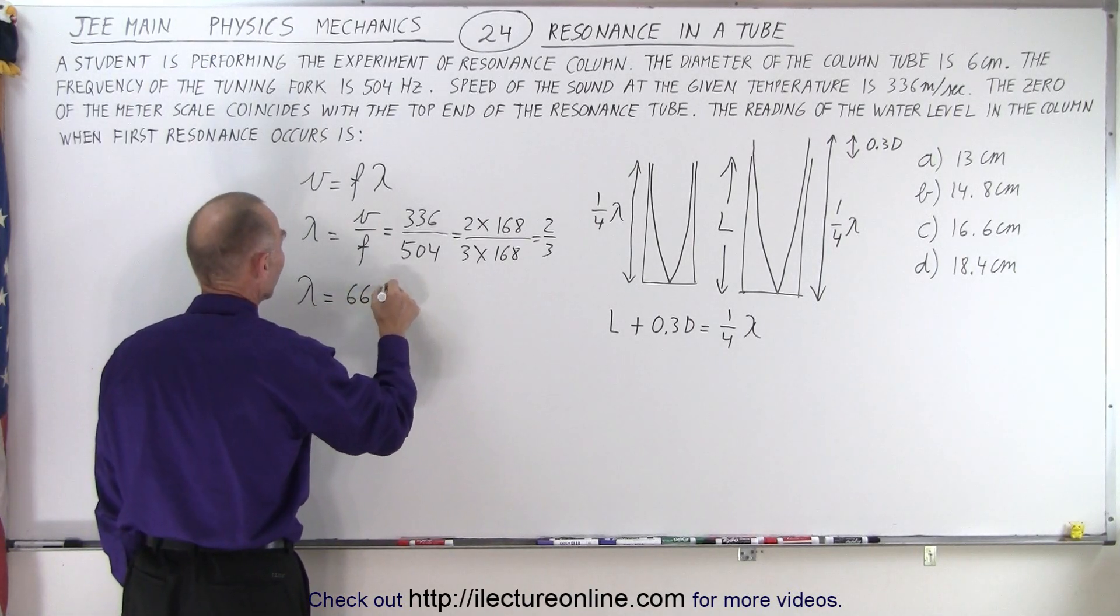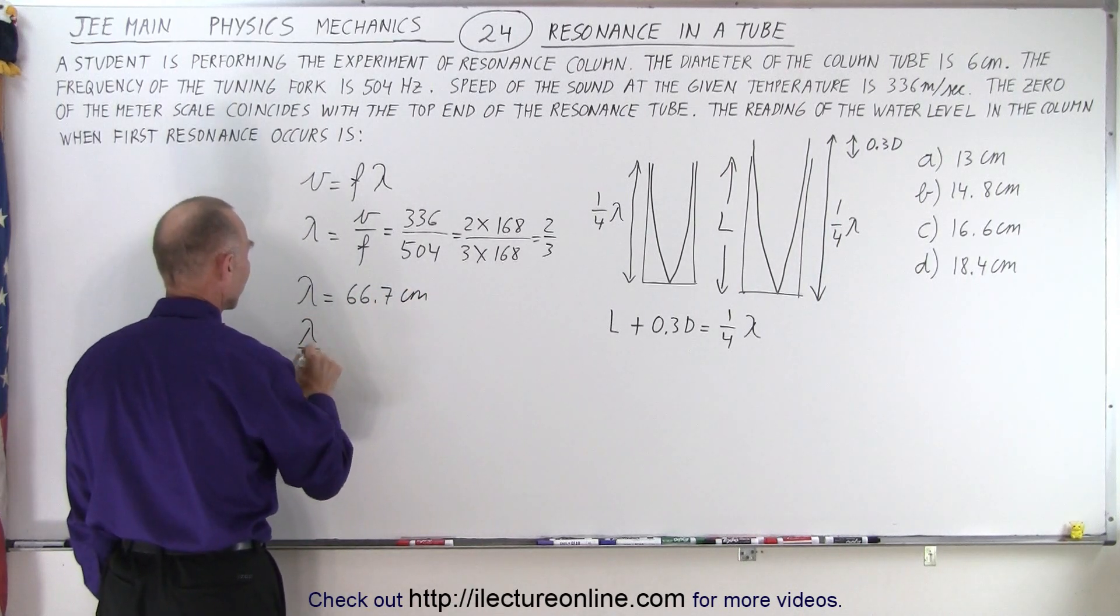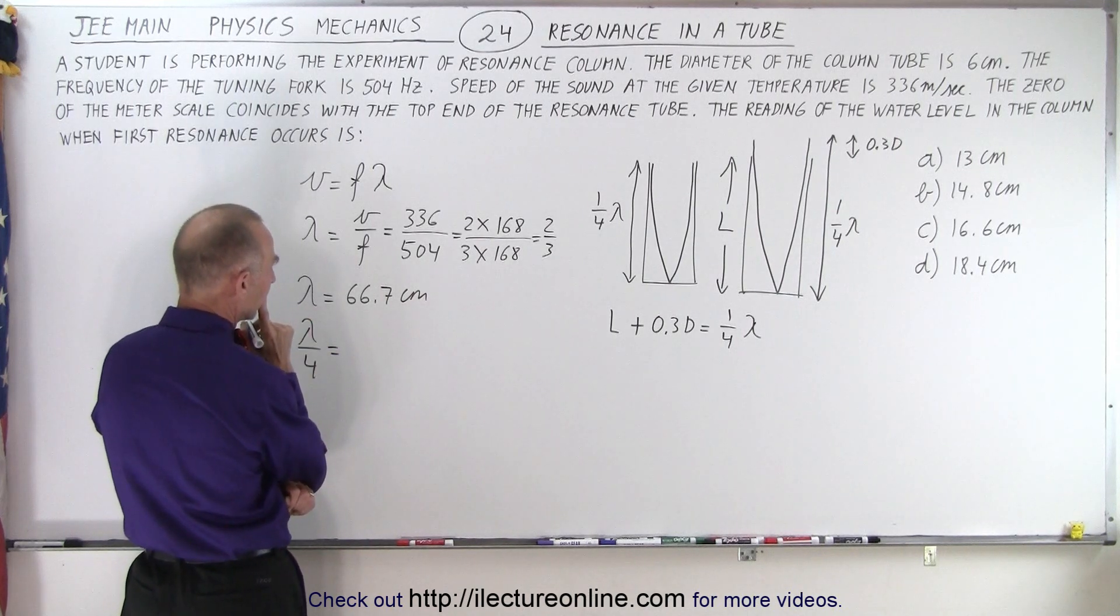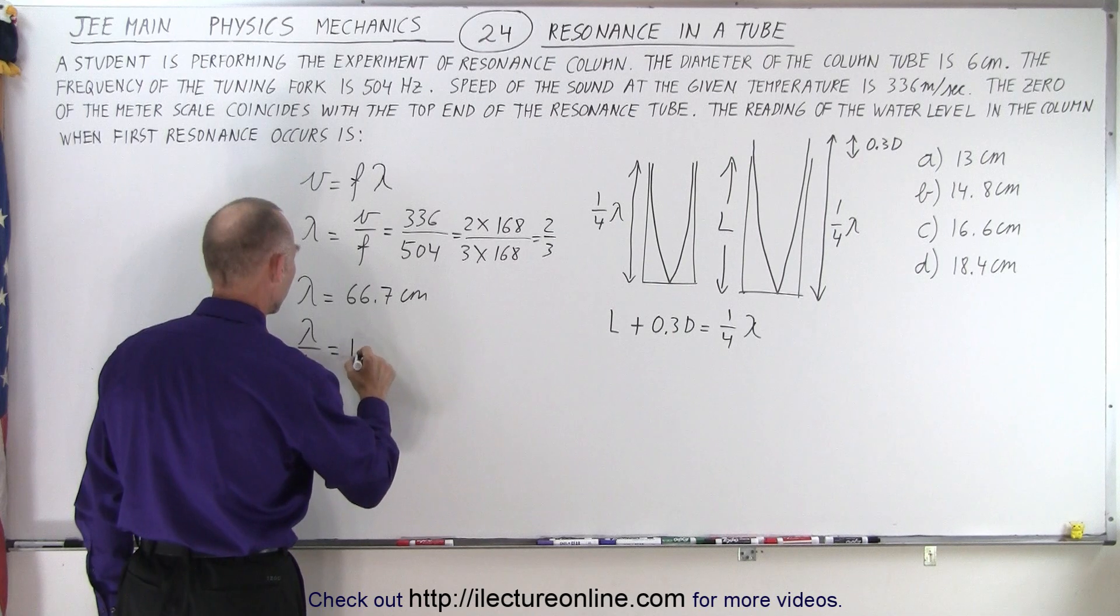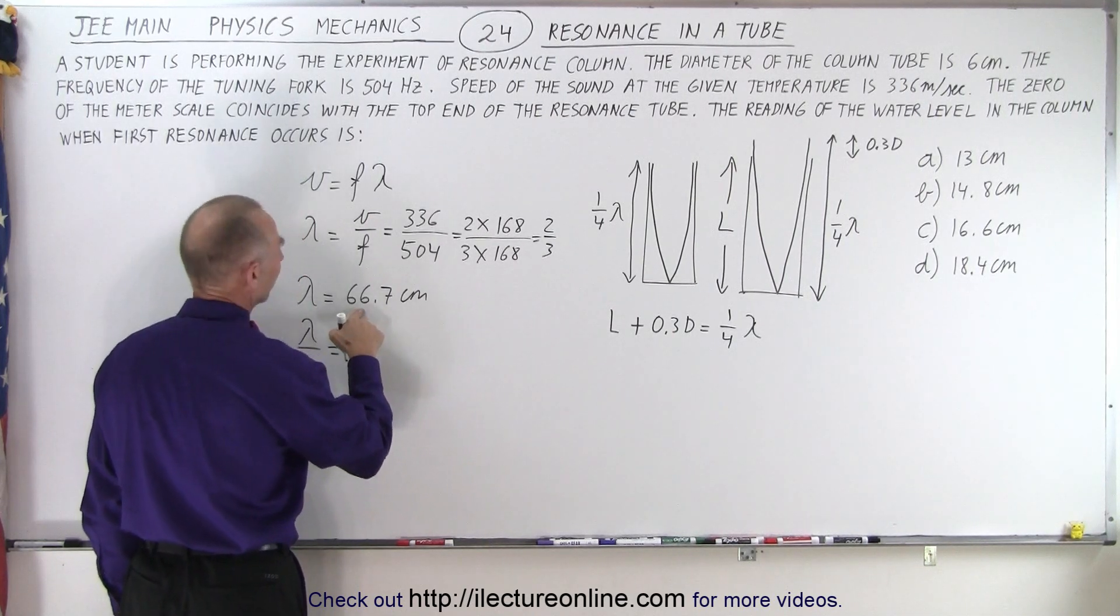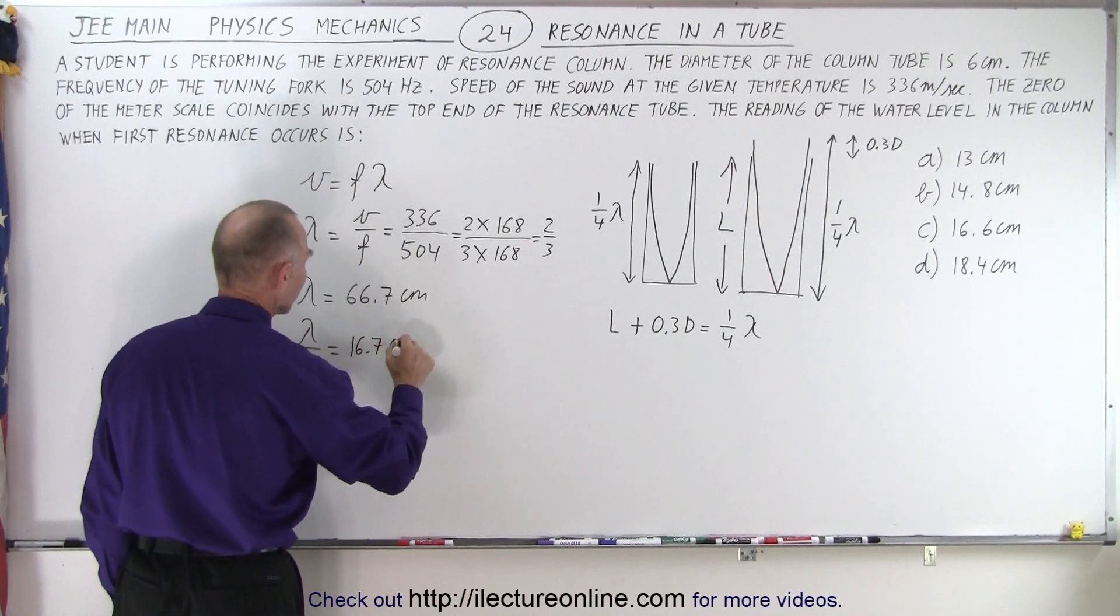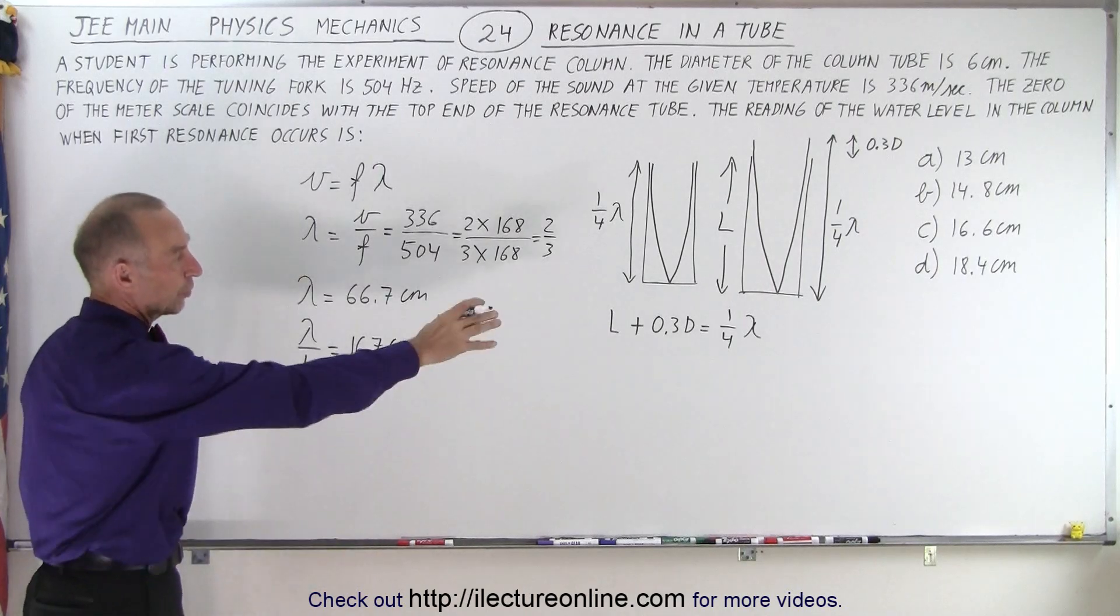So the wavelength is 66.7 centimeters. Lambda equals 66.7 centimeters. And therefore, lambda divided by 4 is equal to one quarter of that. That would be equal to 16.7. Half of that is 33, half of that is 16.7. So 16.7 centimeters for lambda over 4.